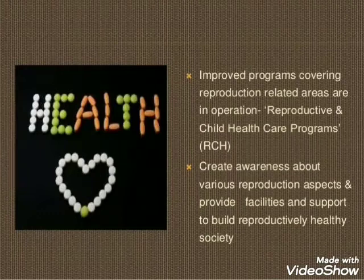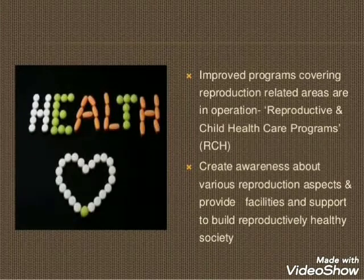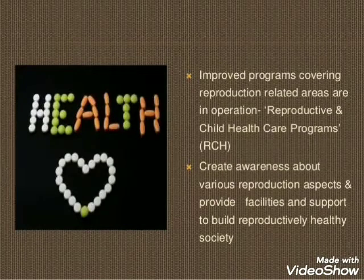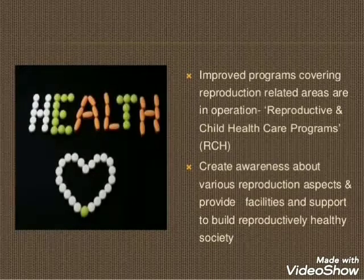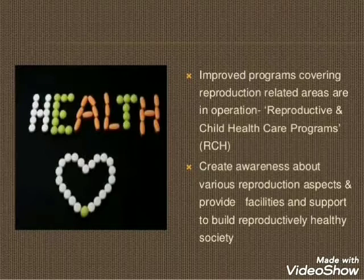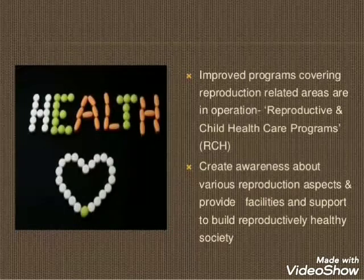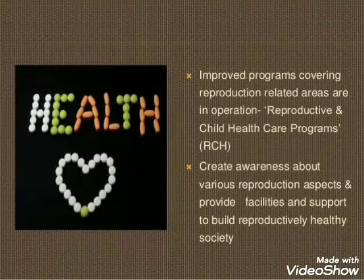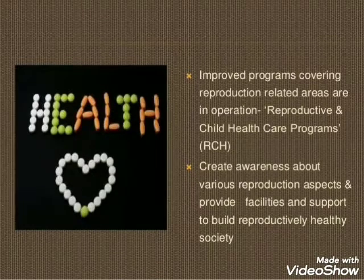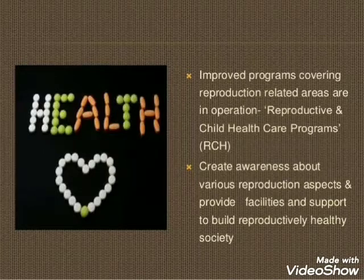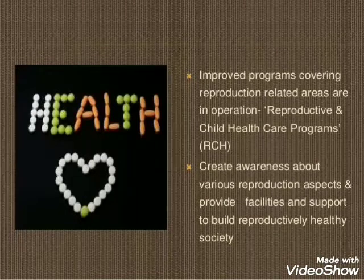Now we will study about the various strategies or steps which have already been taken to overcome these problems. The first strategy is family planning programs, which were initiated as early as 1951. Another is the Reproductive and Child Health Care (RCH) program, which was launched in 1997. These programs are responsible for creating awareness among people about various reproduction-related issues and providing facility and support for building a reproductively healthy society.